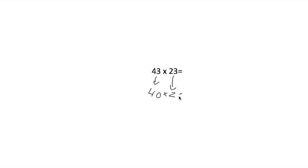4 times 2 equals 8 and then we add our two zeros and our estimate would be 800. So that's our estimate for this answer: 43 times 23, our estimate answer would be 800.